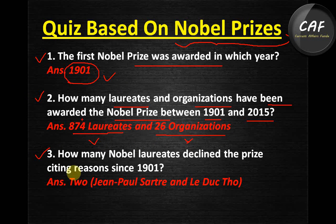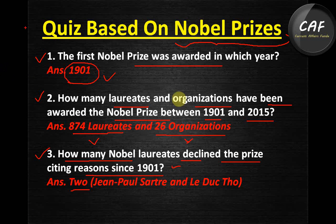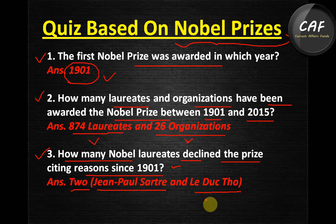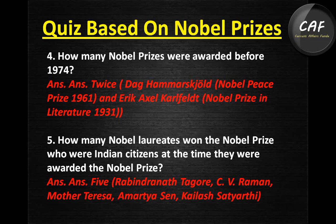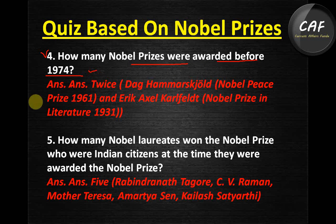Question 3: How many Nobel laureates declined the prize since 1901? Two people declined — Jean-Paul Sartre and Le Duc Tho. Question 4: How many Nobel Prizes were awarded posthumously before 1974? Two — Dag Hammarskjöld for the Nobel Peace Prize 1961 and Erik Axel Karlfeldt for Nobel Prize in Literature 1931.